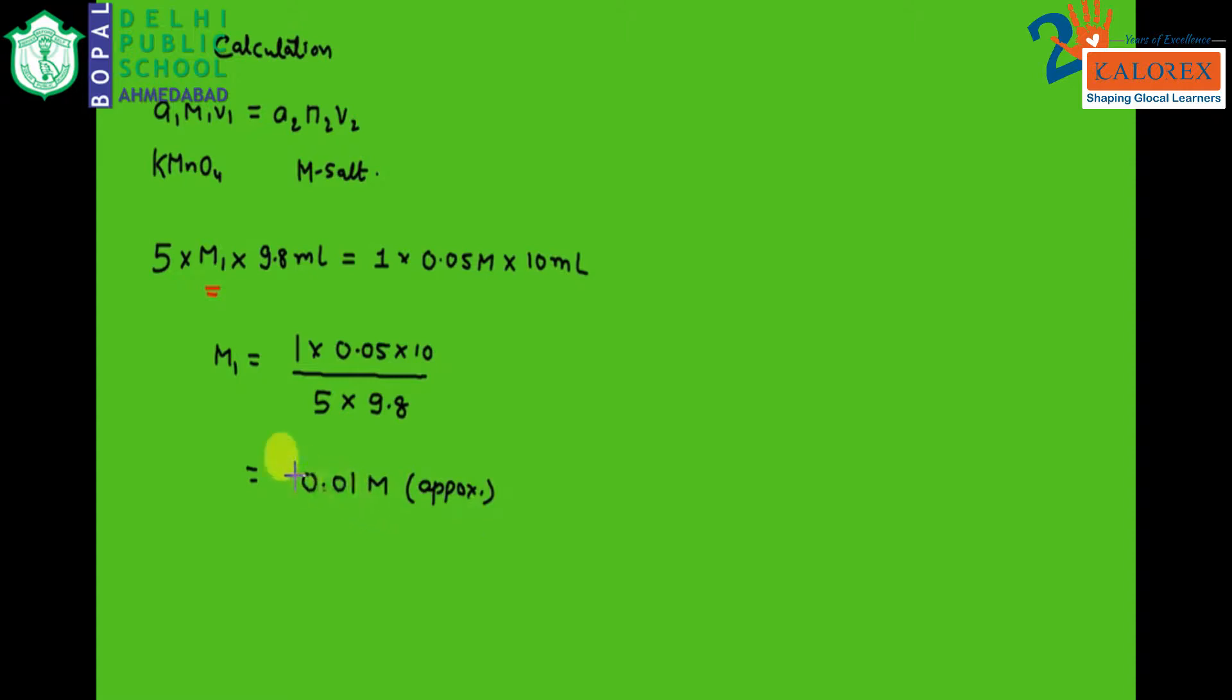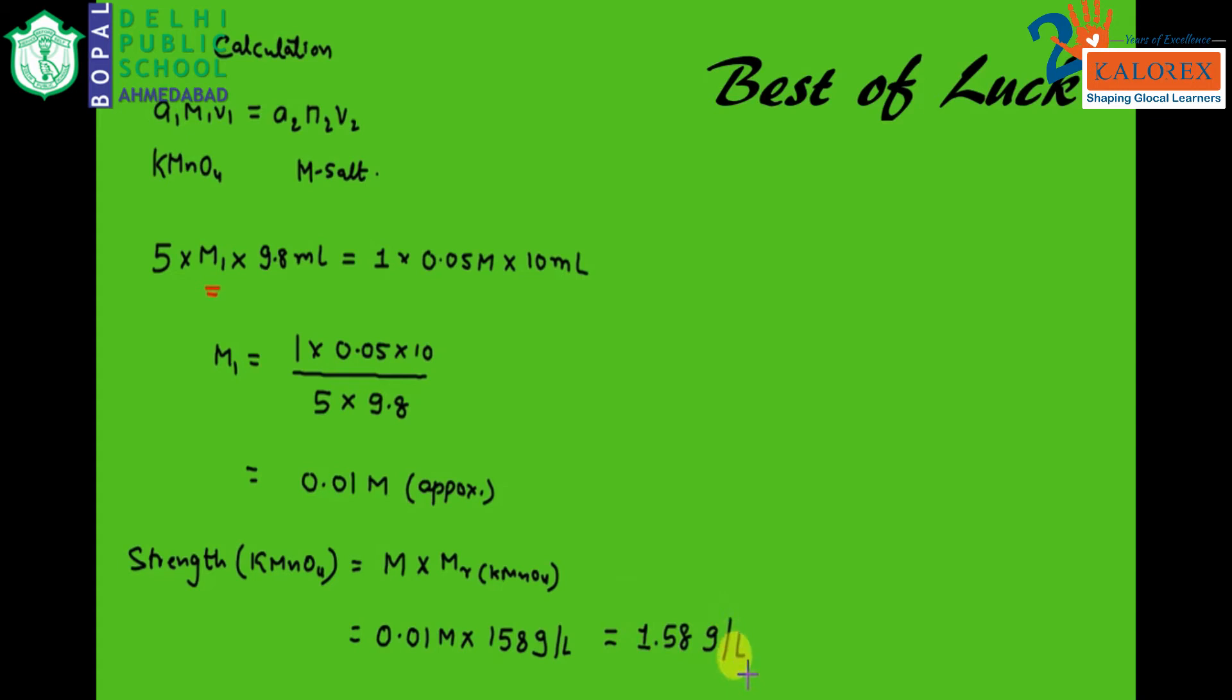So here how we can calculate the molarity of the unknown solution of the KMnO4. Now let us calculate the strength of KMnO4. For the formula, we know that it is equal to molarity of KMnO4 multiplied by molar mass of KMnO4. Molarity we just have calculated as 0.01 molar, into molar mass of KMnO4 that is 158 grams per liter, and when we do the calculation it comes out to be 1.58 grams per liter. This is how we calculate the strength of KMnO4.